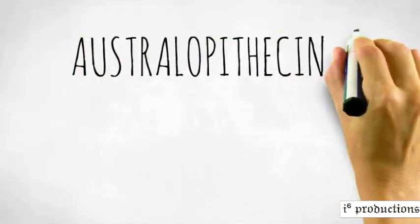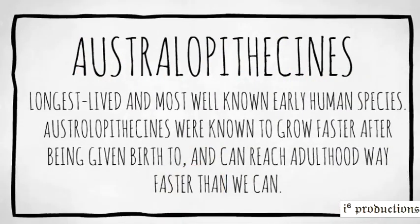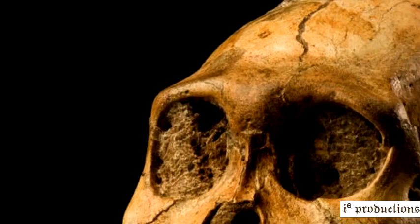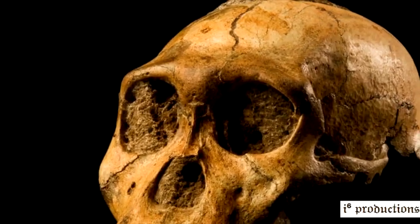The Australopithecines are the longest lived and most well-known early human species, dating back between 3.85 and 2.95 million years ago. These species had survived for more than 900,000 years, which is almost four times as long as their own species has been around.